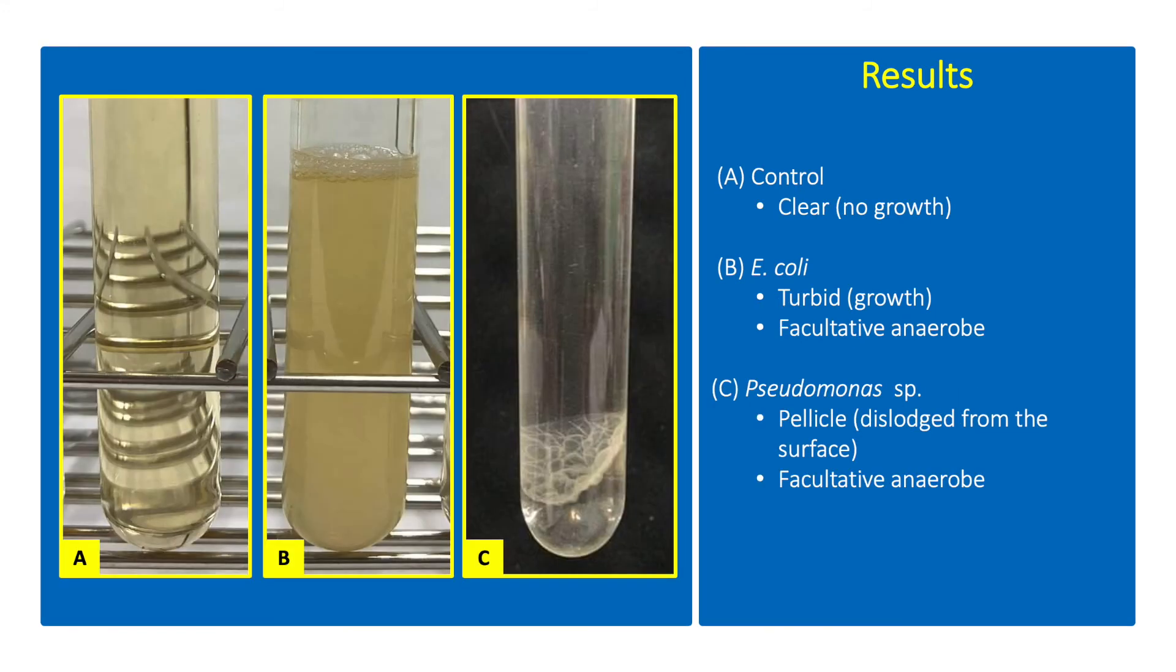Bacterial growth can be visually observed by the turbidity or cloudiness in the broth medium. A control tube containing the broth medium can be used to compare bacterial growth visually or through turbidometric method using a spectrophotometer. E. coli is a facultative anaerobe showing diffuse growth in the broth medium. Diffuse growth can also be an indication of bacterial motility. Some facultative anaerobes may also exhibit pellicle formation, a waxy membrane formed on the surface of the liquid medium. A pellicle formation can also be an indication of growth of non-motile bacterium.